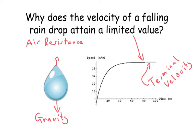The reason why the raindrop attains this limited value is because as the raindrop is falling, it's being pulled on by the force of gravity and it's getting faster and faster. The air is going to start hitting into the raindrop, and the force it's going to experience is air resistance. Eventually, this air resistance, or drag, is going to become equal to gravity.